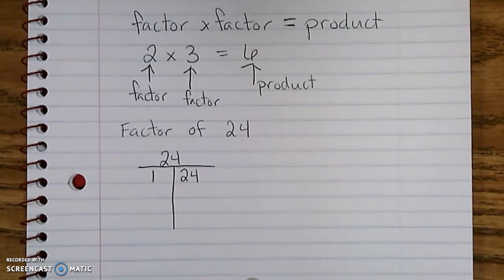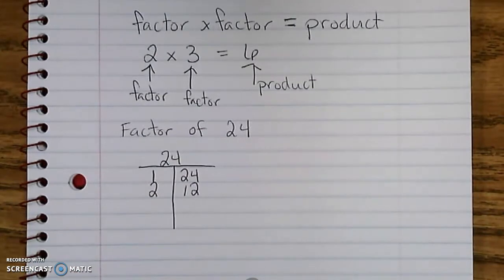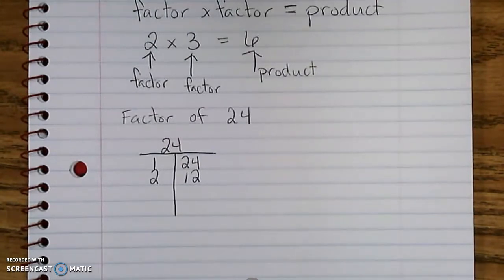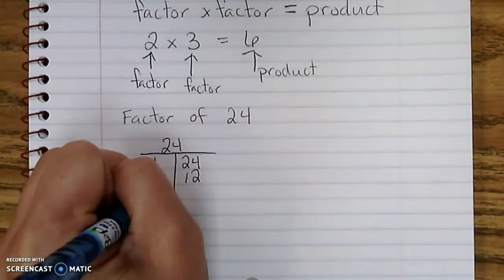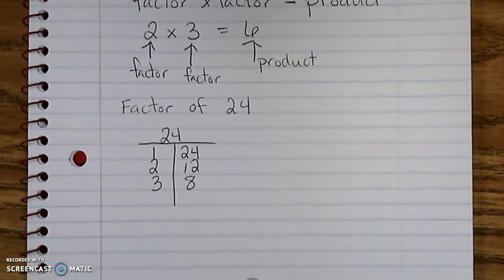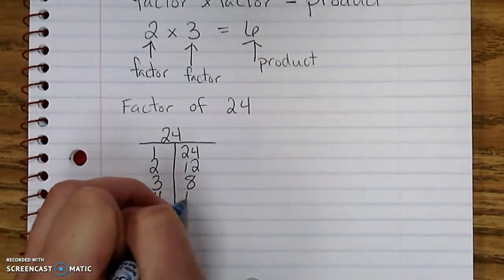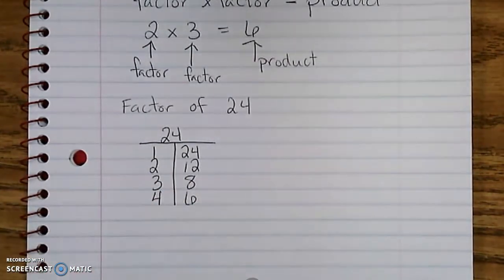Then I think about 2. Is 2 times something equal to 24? Yes, 2 times 12 equals 24, so 2 and 12 are a factor pair of 24. Does 3 times something equal 24? Yes, 3 times 8 equals 24. If I'm having trouble with my factors I can always get a multiplication chart to help, or I may have to do some scratch work division on the side to see if 3 goes evenly into 24. Then, is 4 a factor of 24? Yes, 4 times 6 equals 24.